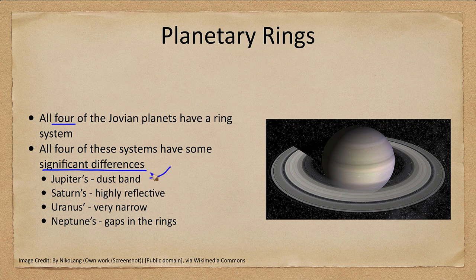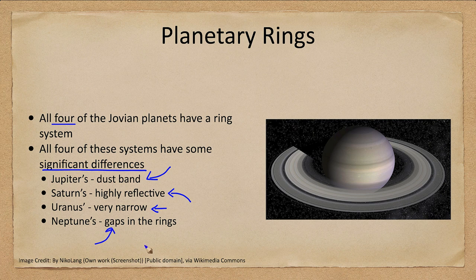Jupiter's is essentially a dust band. Saturn's rings are highly reflective and very prominent. Saturn's are very narrow and dark, and Neptune's have gaps in their rings. So they're all a little bit different, and we're going to look at each of them in a little bit more detail over the coming slides.